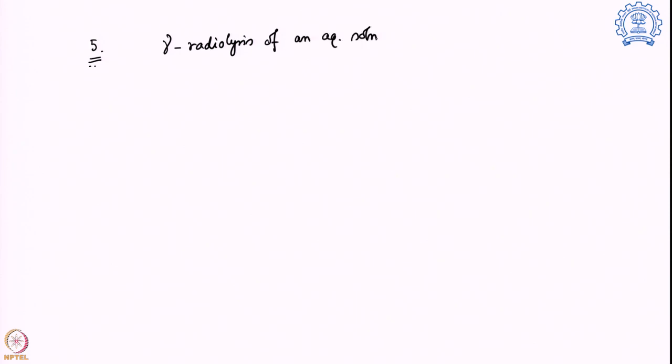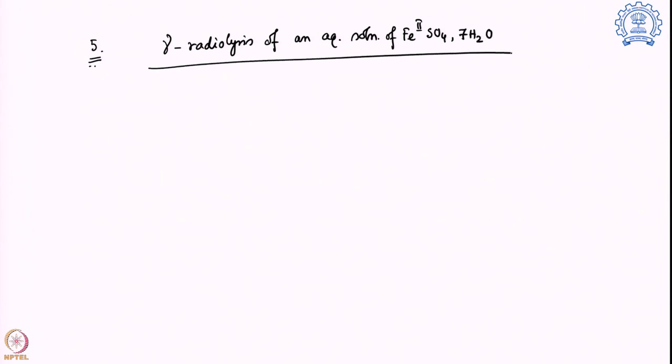This is example number 5 of the application side. We are going to look into gamma radiolysis of an aqueous solution of iron(II) sulfate heptahydrate (FeSO₄·7H₂O). Gamma radiolysis means shooting the sample with gamma rays so that it can start a reaction by exchanging electrons.